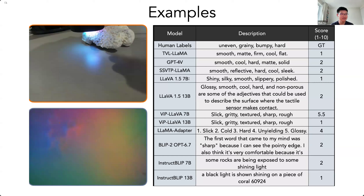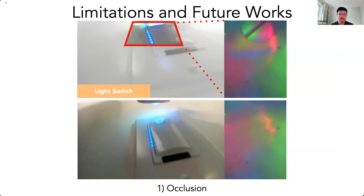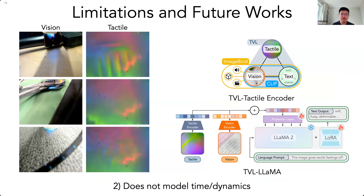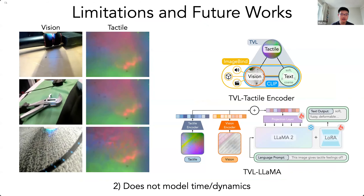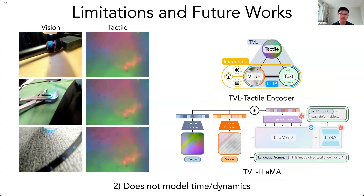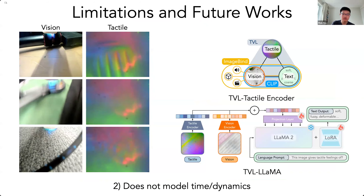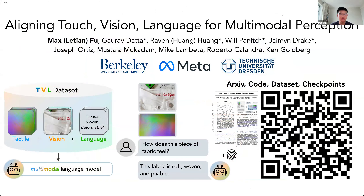There are still failure cases — the model sometimes generates incorrect descriptions when touching surfaces like stone or coral. Limitations include: the data collection setup is prone to self-occlusion causing incorrect pseudo labels, and neither model currently captures the dynamics or temporal aspect of the data. The code, dataset, and checkpoints are all released — you can scan the QR code to obtain them.